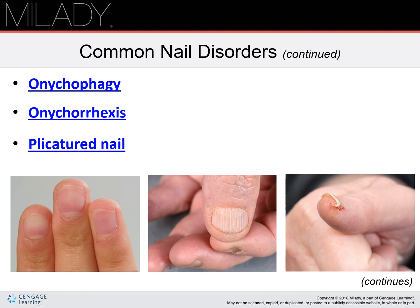Onychorrhexis refers to split or brittle nails with lengthwise ridges. This is caused by an injury to the matrix, excessive use of cuticle solvents, harsh cleaning agents, polish removers, aggressive filing, or hereditary causes. Nail services can be performed only if the nail is not split next to the tissue in the nail bed.